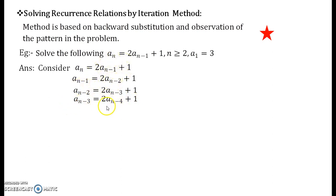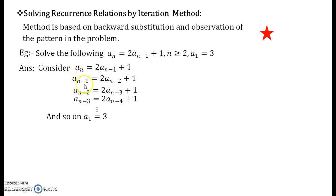You can go on continuing this until you reach a₁ = 3, because a₁ is the first term in our sequence. Note that aₙ is the nth term, aₙ₋₁ is the (n−1)th term, and so on — we are going in the backward direction from the nth term, finding the (n−1)th, (n−2)th, (n−3)rd term, all the way down to the first term.